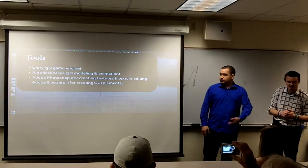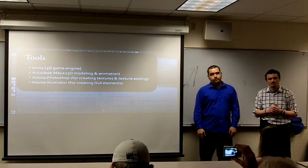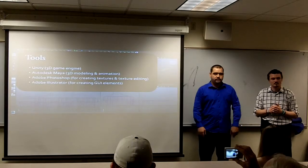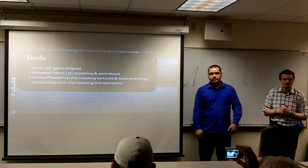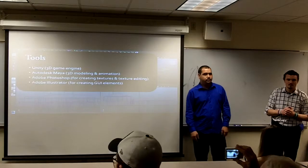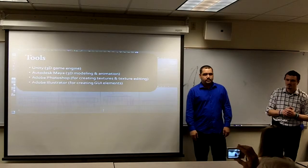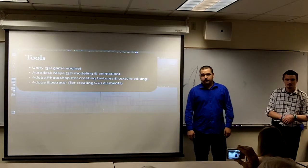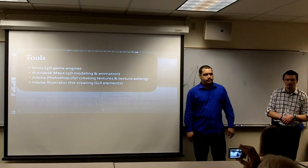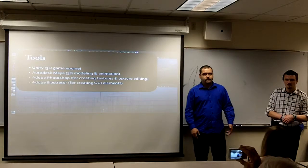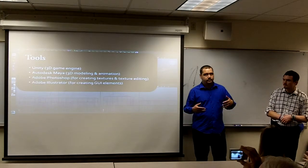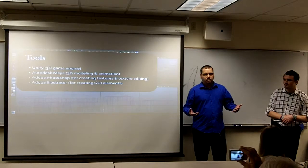Some of the tools we used for our project included Unity, which is a 3D and 2D game engine — we used both sides. There's also Autodesk Maya, which is a 3D modeling and animation program — it's a pretty complex program on its own. We also used Adobe Photoshop for doing the textures and editing textures. There are some custom-made textures, but also some borrowed ones, so we had to do a lot of research and searching to make it look good.